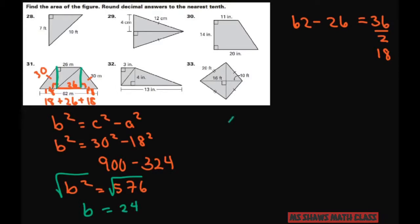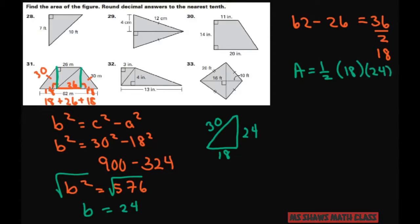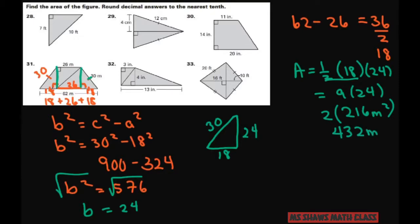So I'll draw the triangle: the base is 18, the hypotenuse is 30, and the height is 24. The area of that triangle is one half base times height — one half of 18 is 9, so that's 9 times 24, which equals 216 square meters. But we have two triangles, so we multiply by 2 to get 432 square meters for both triangles.